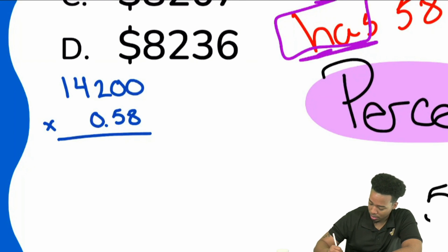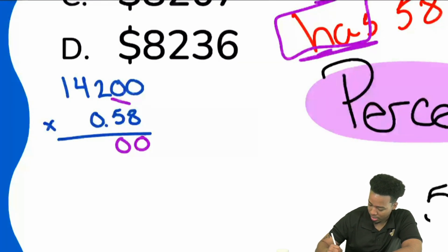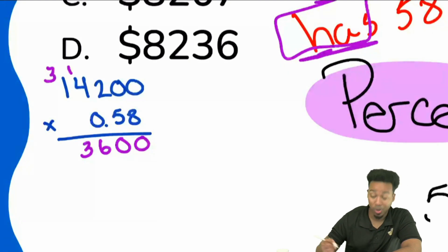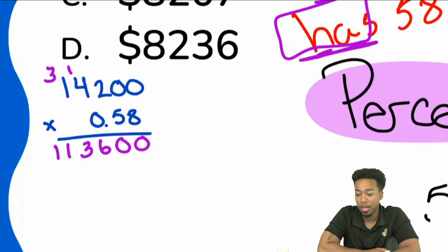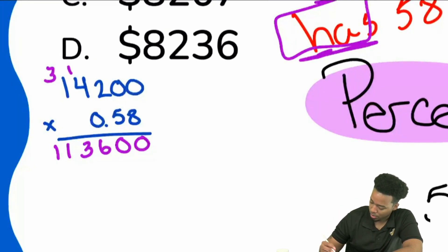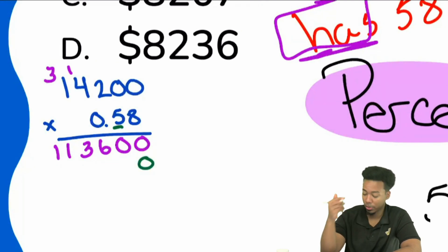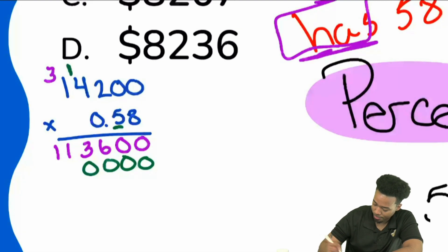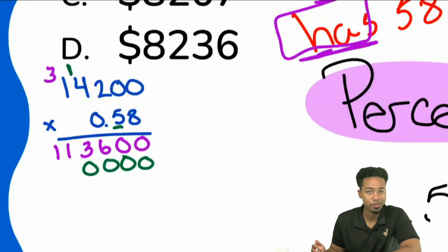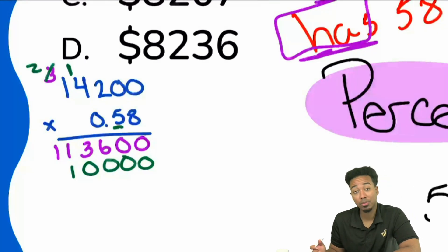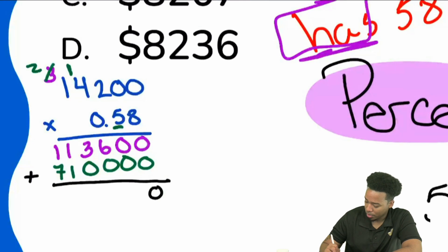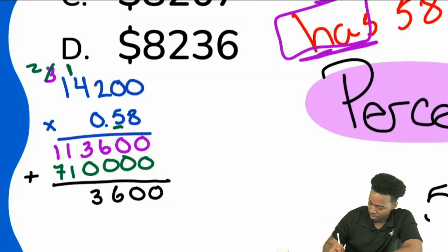First row in purple: 0 times 8, 0 times 8, 2 times 8 is 16 — carry the 2. 4 times 8 is 32, carry the 1, that's 33. 1 times 8 is 8, carry the 3, that's 11. Next line — since we're moving lines, put a 0 there. 0 times 5, 0 times 5, 2 times 5 is 10 — carry the 1. 4 times 5 is 20, bring the 1 back, that's 21. 1 times 5 is 5, carry the 2, making it 7. So now we have 0, 0, then we add everything up: 6, 3, 2, and 8.